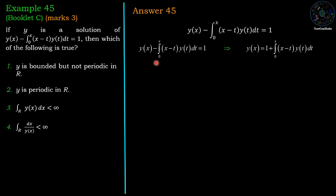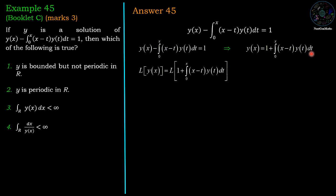We have y minus integration from 0 to x of (x minus t) y(t) dt equals 1. Taking the negative term to the right hand side, y(x) equals 1 plus integration from 0 to x of (x minus t) y(t) dt. Applying Laplace transform to both sides, the Laplace of y(x) equals the Laplace of 1 plus the Laplace of that integral.